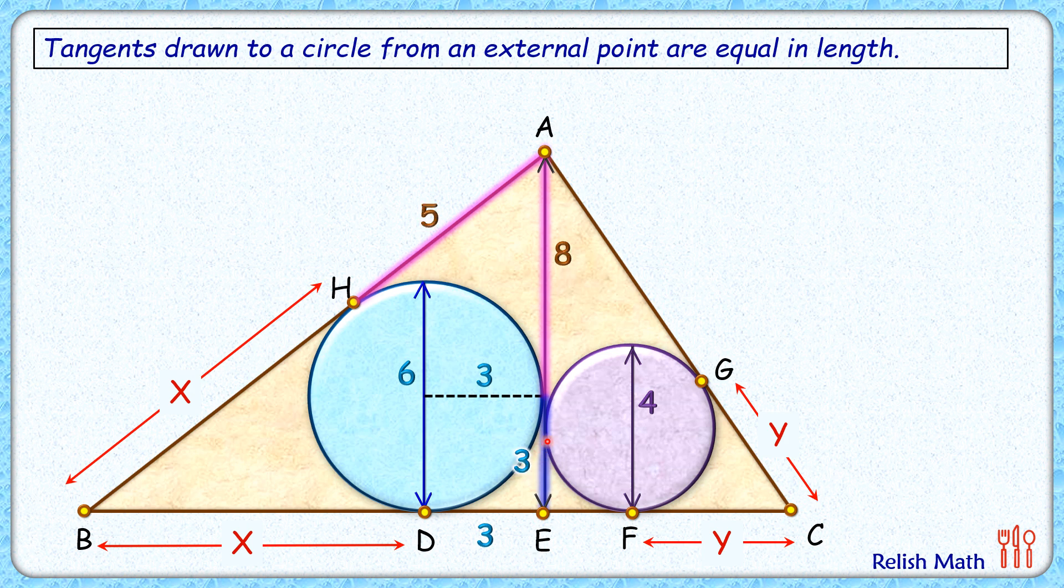Now consider this purple circle. Its radius is 2 cm. EF length is 2 cm, and this height is the same, 2 cm. So from point A, this particular length will be 8 minus 2, or 6 cm.